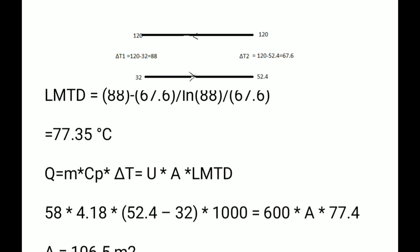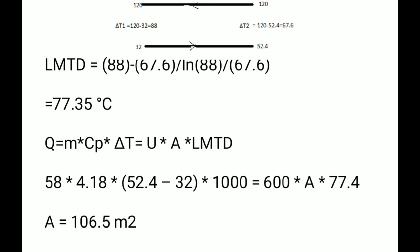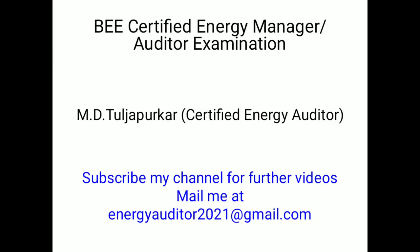Using Q = U·A·LMTD, with m·c·ΔT for the water as the heat input, U = 600 W/m²·°C, and LMTD = 77.35°C, the heat exchanger area A = 106.5 m². For any queries related to heat exchanger numericals, you can write at energyauditor2021@gmail.com. If you liked the video, please give a like and subscribe to the channel.